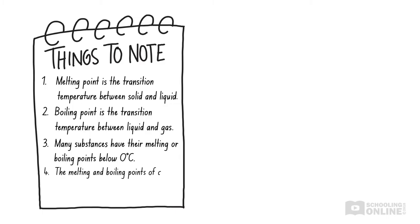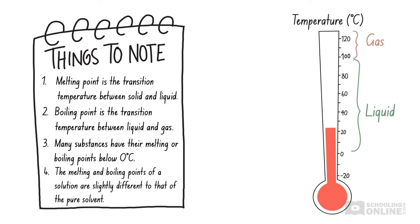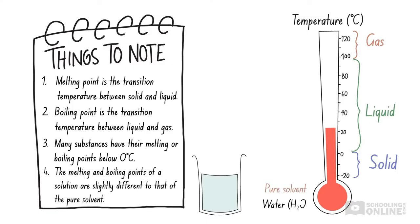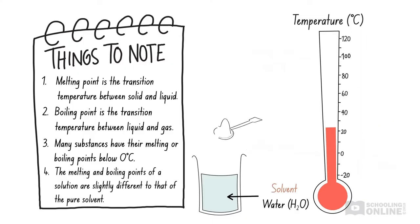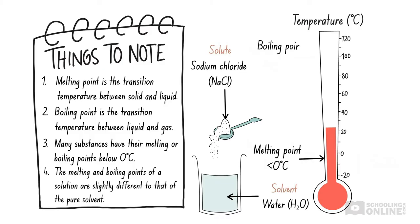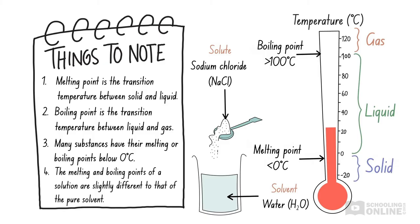The melting and boiling points of a solution are slightly different to that of the pure solvent. Remember, a solution is a homogeneous mixture in which the dissolved particles are extremely small. It occurs when a solute dissolves in a solvent. For example, water melts at zero degrees Celsius and boils at 100 degrees Celsius. But if we dissolve sodium chloride in water, the resultant salt solution has a lower melting point and a higher boiling point than pure water. For the HSC, you don't need to know any details such as why or how this happens, but it will help you understand the examples in this video.